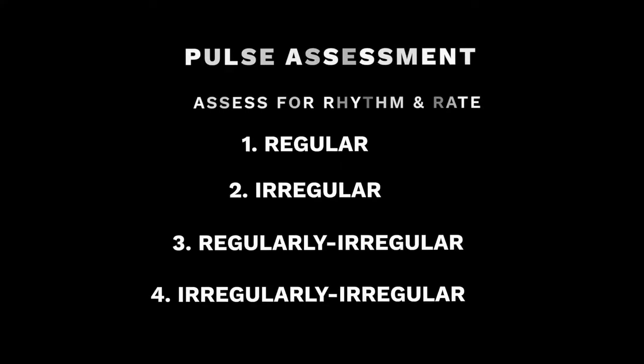When we assess a pulse, we want to assess for the rhythm and the rate. Pulses can be described as regular, irregular, regularly irregular, or irregularly irregular. Normally you want to count for one minute.